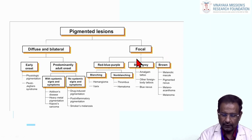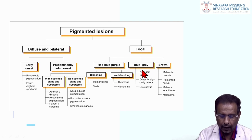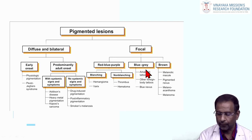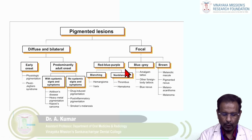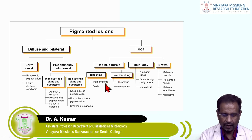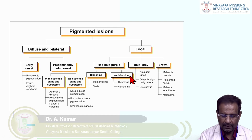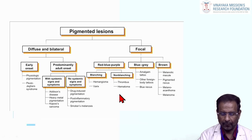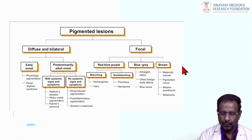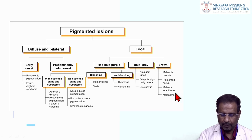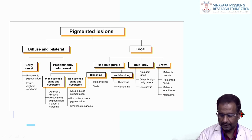In the focal category, lesions are divided into three types: red/blue/purple lesions, blue-gray lesions, and brown color lesions. Under red/blue/purple: blanching lesions include hemangioma and varices; non-blanching lesions include thrombus and hematoma. Under blue-gray: amalgam tattoo, foreign body tattoos, and blue nevus. Brown color lesions include melanotic macule, pigmented nevus, melanoacanthoma, and melanoma. These are the classifications of pigmented lesions.